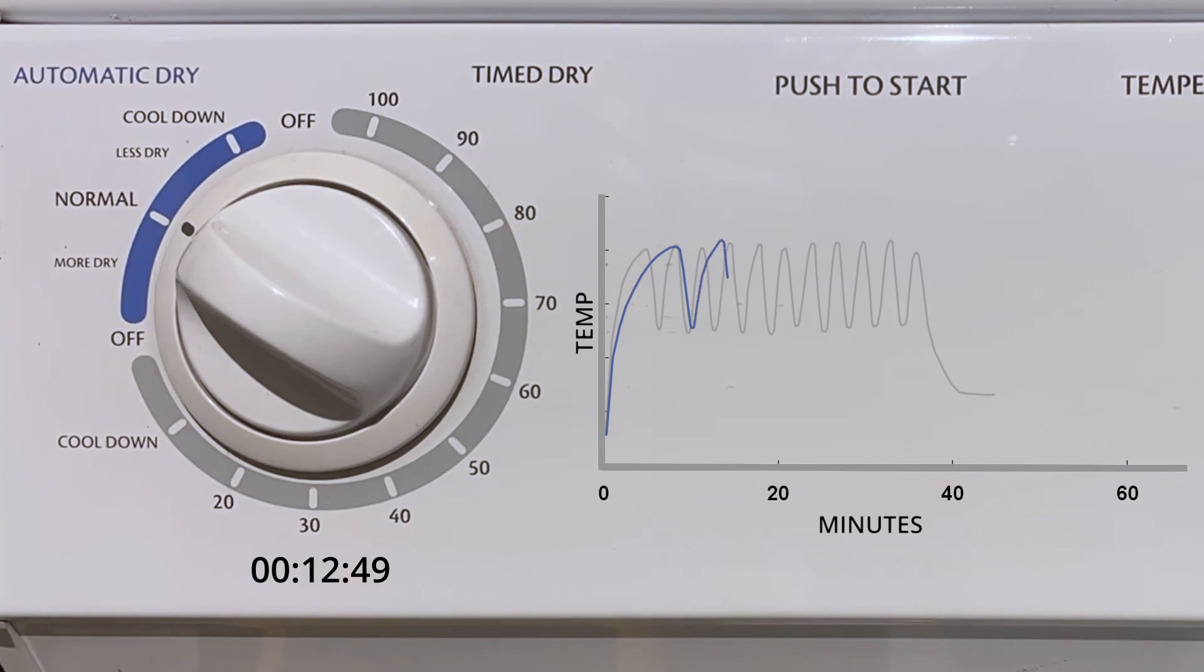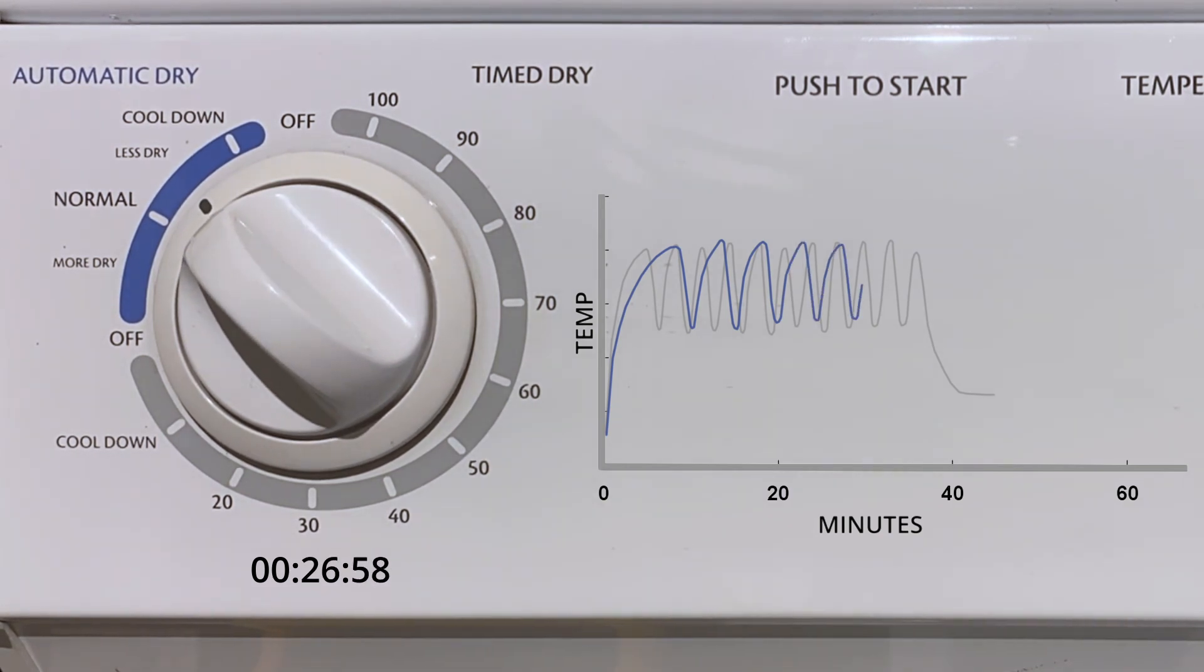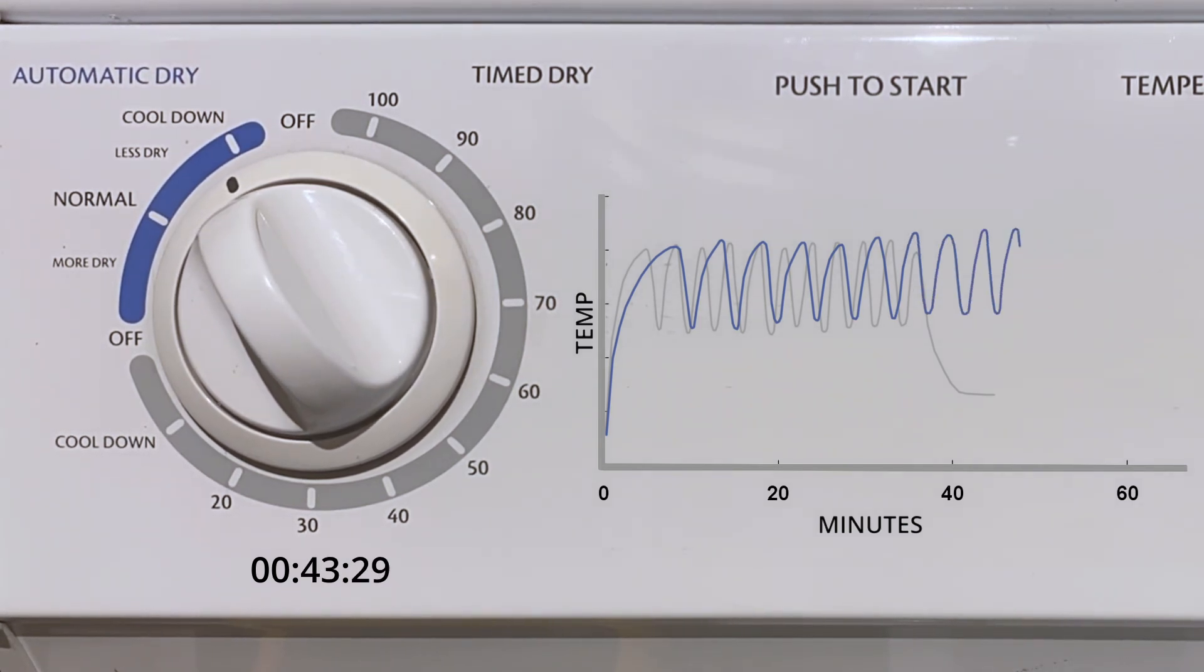Now if we let the cycle finish again, we'll see the knob only advances when the heating element switches off. Because the heating element has to stay on longer with two towels before reaching the upper temperature limit each time, we can see that the knob advances less frequently than before, causing this cycle to take 49 minutes.